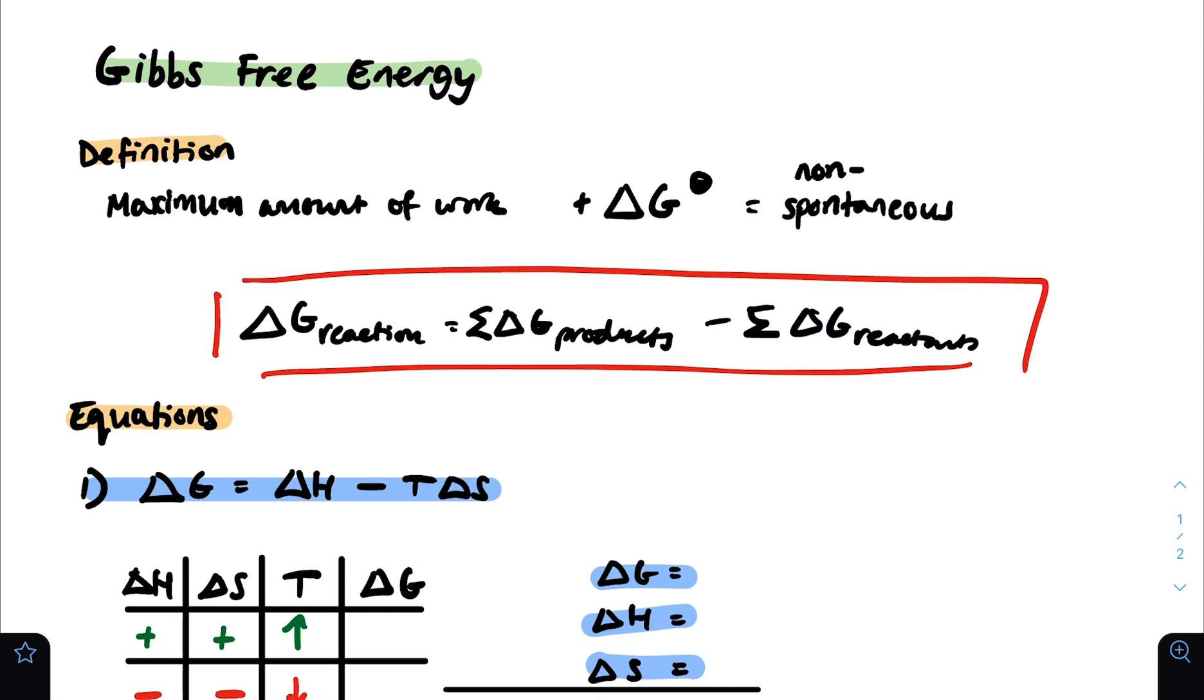So to calculate the Gibbs free energy, we know there's one key equation here. The first one is delta G of the entire reaction is the sum of delta G of the products minus the sum of delta G of the reactants. It's a bit like enthalpy cycles, where you have products minus reactants, and you do so by looking at the given equation. It'll typically tell you what the Gibbs free energy is for each of the products and reactants, or if not, you can always check in the data book.